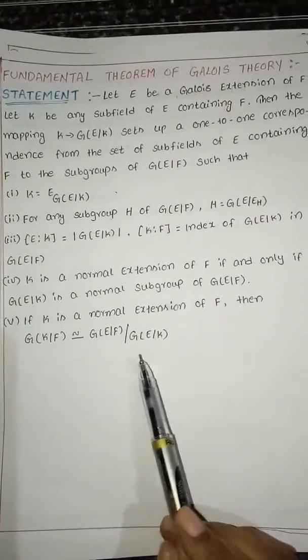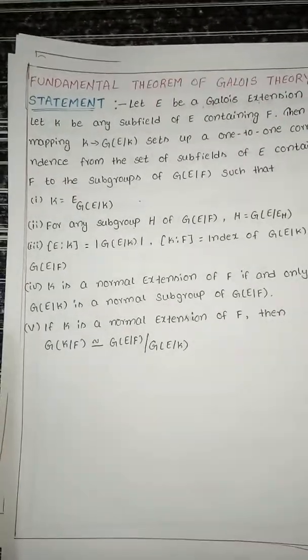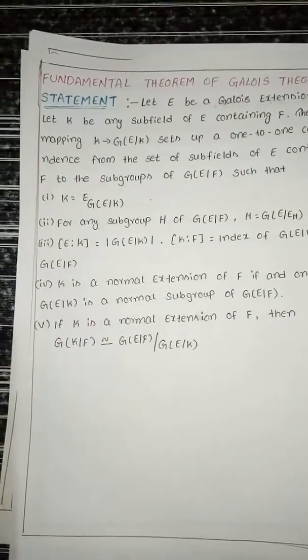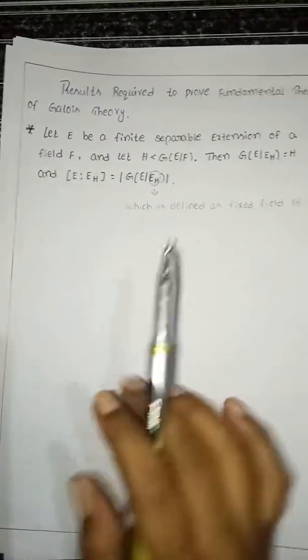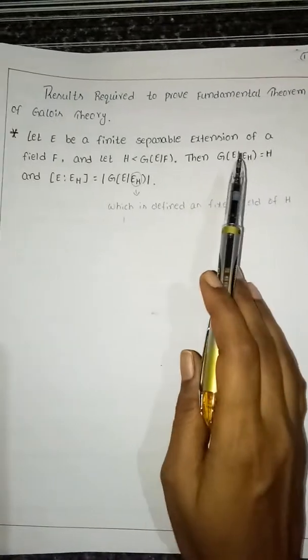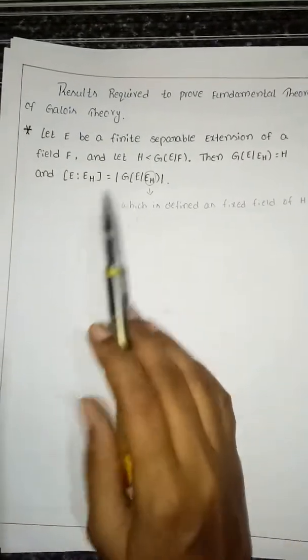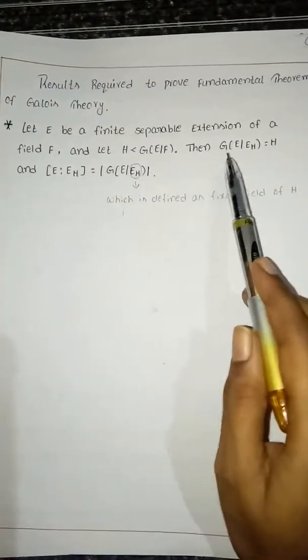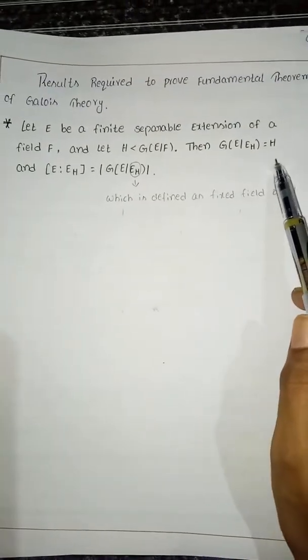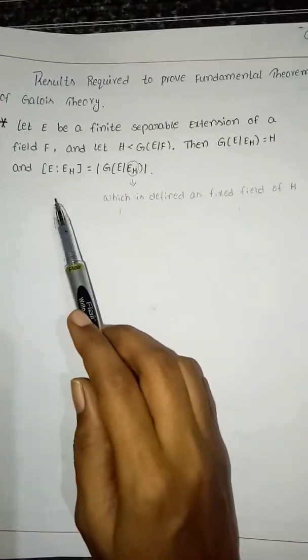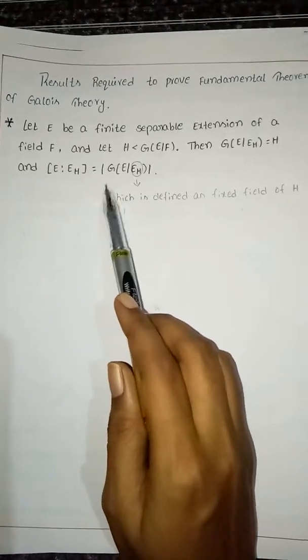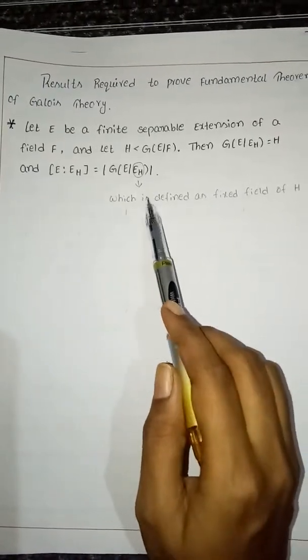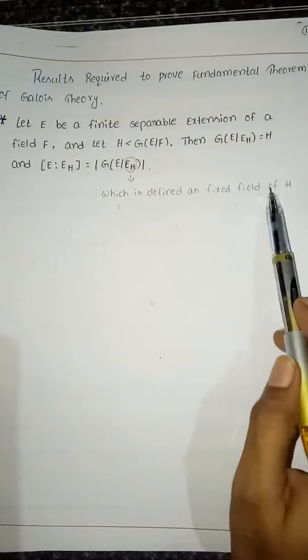Before going to the proof of the theorem, we require some results which are already proved. Let E be a finite separable extension of field F and let H be a normal subgroup of G(E/F). Then G(E/E^H) equals H, and the dimension of E over E^H equals the order of G(E/E^H), where E^H is defined as the fixed field of H.